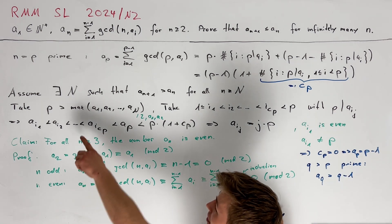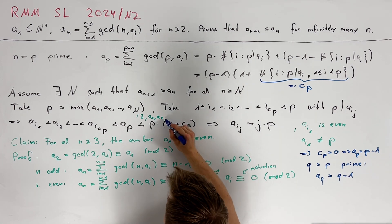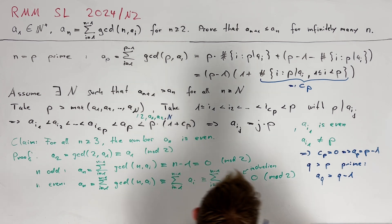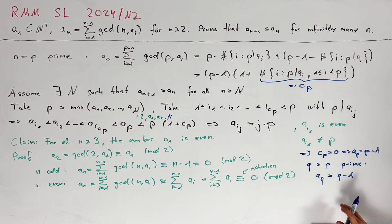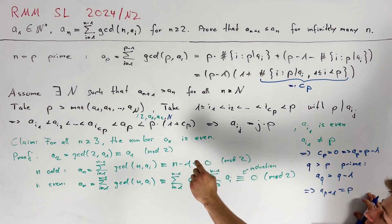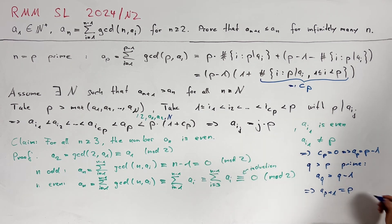The last assumption we want to make on p is that p should be also greater than n because then we know that the sequence a_p, a_{p+1} and so on is increasing and therefore these two equalities here directly imply that a_{p+1} must be equal to p. This is a contradiction to our claim and therefore our assumption was wrong and hence we are done.